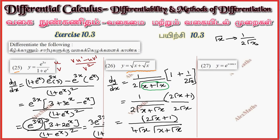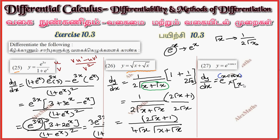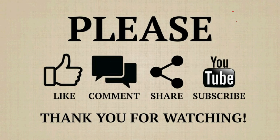Question number 27: using the chain rule, dy/dx of e power something — e is the outer function. So e power x·cosx. By the chain rule, differentiating x·cosx: x into minus sinx plus cosx into 1. So the total answer is e power x·cosx, bracket open, negative x·sinx plus cosx, bracket close, divided by 2 root x.